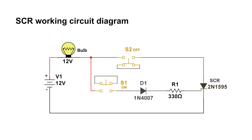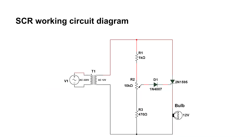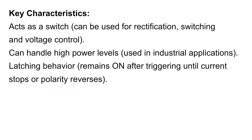SCR Working Circuit Diagram. Key Characteristics: Acts as a switch — can be used for rectification, switching, and voltage control. Can handle high power levels, used in industrial applications. Latching behavior: remains on after triggering until current stops or polarity reverses.